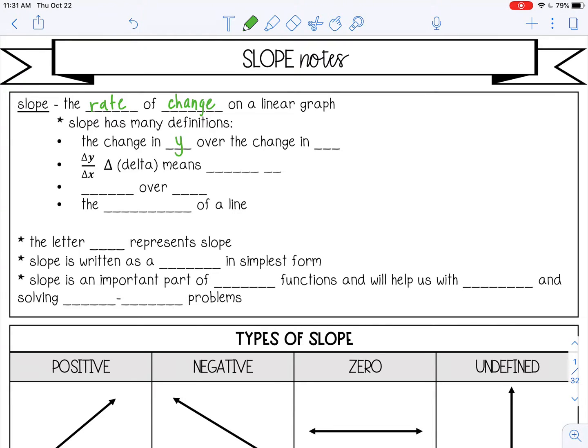Slope has many definitions besides rate of change. It's also the change in y over the change in x, or you can write that using symbols, delta y over delta x. And delta is this symbol here, and it means change in. It's also rise over run, or the steepness of a line.